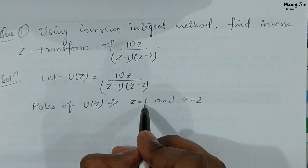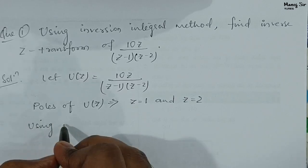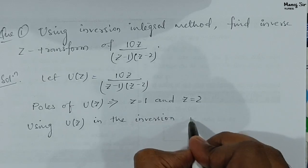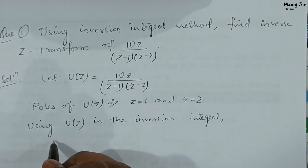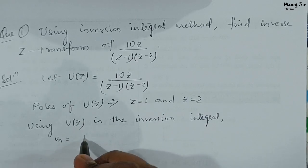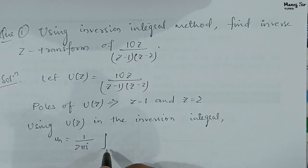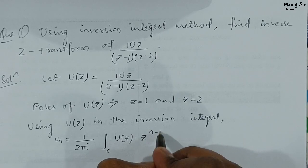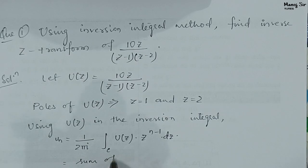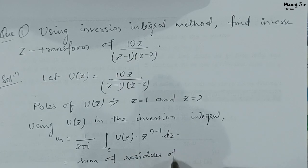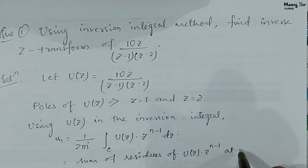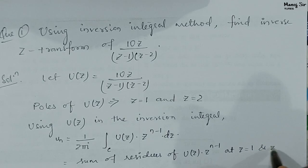We have two poles at z = 1 and z = 2. Using U(z) in the inversion integral, the inverse Z transform gives u(n), which equals the sum of residues of U(z) into z power n minus 1 at the two poles, that is at z = 1 and z = 2.